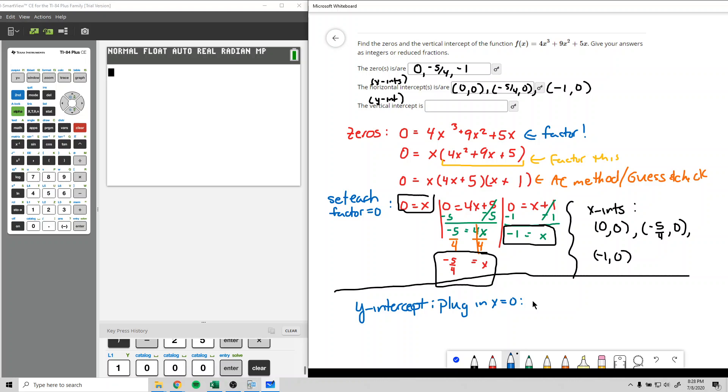And we get y, or f of 0, equals 4 times 0 cubed plus 9 times 0 squared plus 5 times 0. And luckily for us, there's a whole bunch of zeros. This is 0, this is 0, this is 0. It adds up to 0.